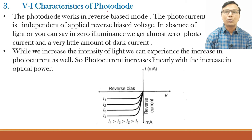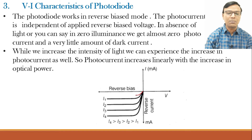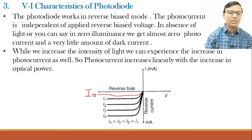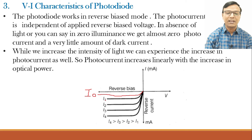This is the VI characteristics of a photodiode. We are operating the photodiode in the reverse bias condition. When no photon is falling on it, some current still flows in reverse bias — we call this I₀, the dark light photocurrent. If I make some photons fall on it, the current increases to I₁. More photons gives I₂, and increasing light further gives I₃, I₄, and so on — each step showing increased current with increased light intensity.